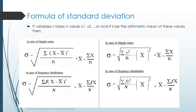Let's see another set of standard deviation formulas. In case of simple series, standard deviation equals the square root of sigma(x squared) divided by n minus x-bar squared. Here, x-bar squared is written as (sigma x divided by n) whole square. So the formula can also be written in that way.